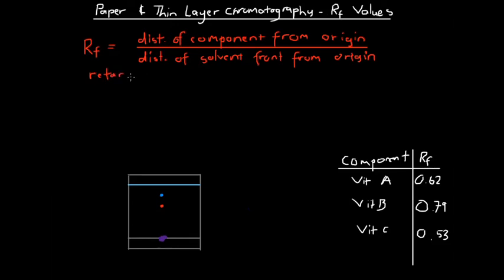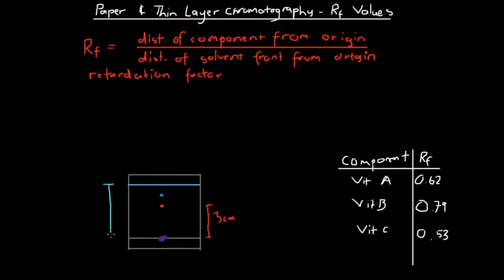We can calculate the retardation factor by dividing the distance of the spot from the origin by the distance of the solvent front from the origin. So if we have a chromatogram where a purple spot was placed at the origin, and after running we get a red spot that is three centimetres from the origin, and the solvent front is five centimetres from the origin, then the retardation factor is three over five, or 0.6.